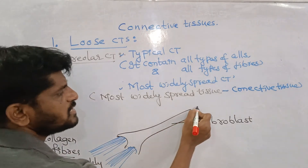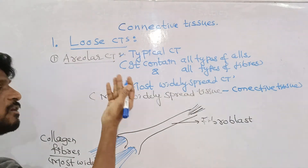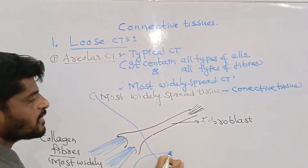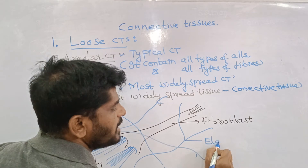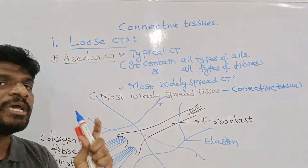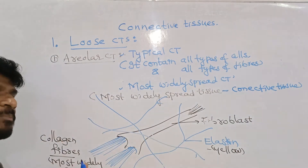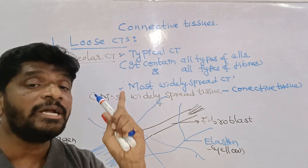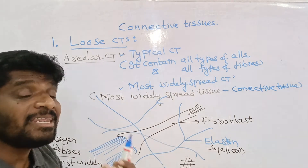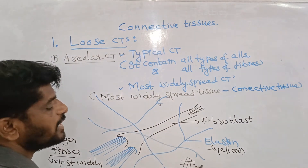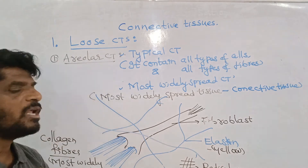Not only collagen fibers are visible. The collagen fibers are arranged in bundles. There are other types of fibers — these are the elastin fibers. Elastin is also a protein, but it is a yellow protein, while collagen is a white protein. There are also reticular fibers, which form a reticulum or net-like structure. Reticular fibers are also made up of collagen, but not arranged in bundles.